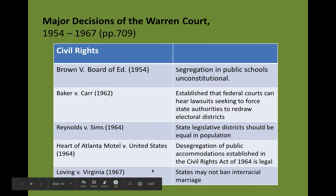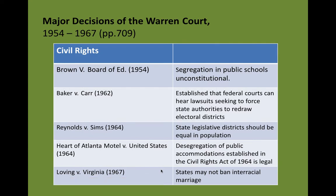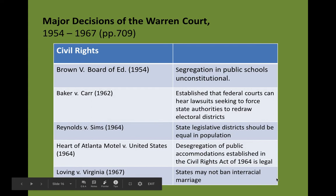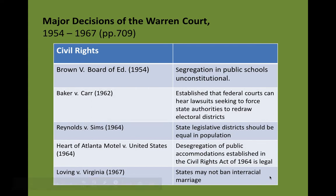Loving v. Virginia — Loving was his last name — was an African-American woman and a white man who wanted to get married, and the state of Virginia, along with quite a few other states, actually did not allow interracial marriage. They took it all the way up to the Supreme Court and the Supreme Court said it doesn't matter what race you are — marriage certificates cannot be denied based on race. And so it knocked down those interracial marriage bans in a bunch of Southern states.